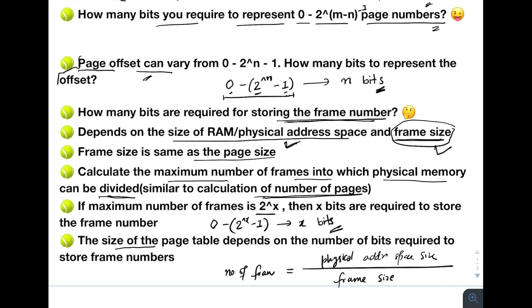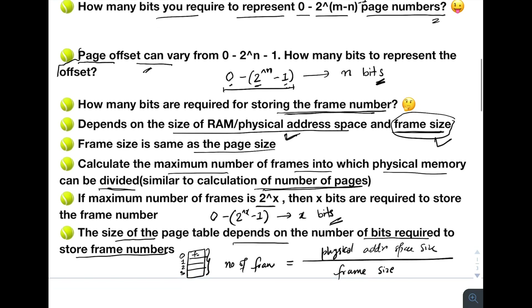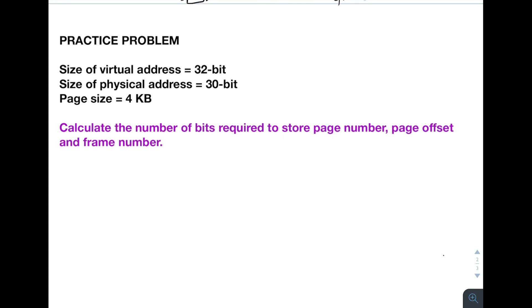The size of the page table depends on the number of bits required to store the frame number. In the page table, indexed by page number, the values stored are the frame numbers. So the size of each entry in the page table depends on how many bits are required to store the frame number.